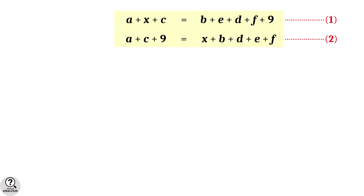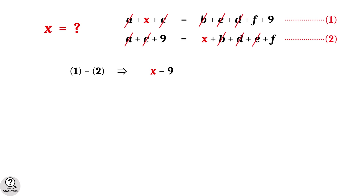With these two equations, subtract equation 2 from equation 1. On the left side, a and c cancel, leaving x minus 9. On the right side, b, e, d, and f cancel, leaving 9 minus x. So we have x minus 9 equals 9 minus x, which gives 2x equals 18, therefore x equals 9.